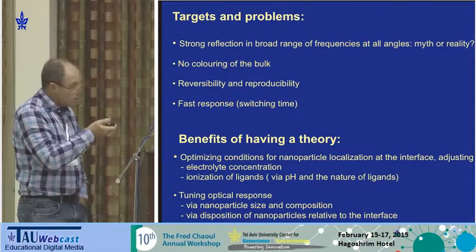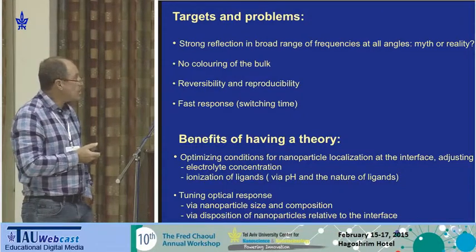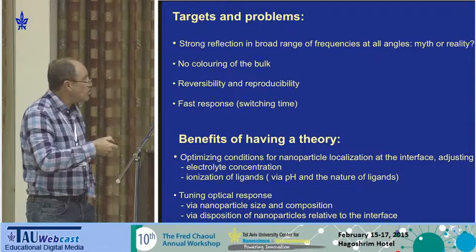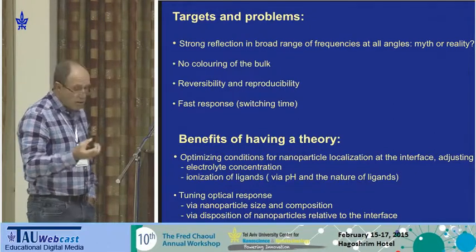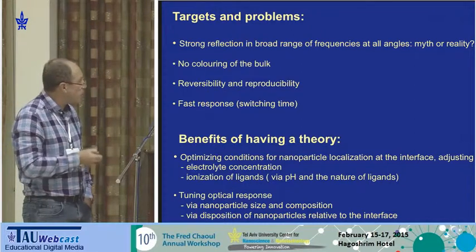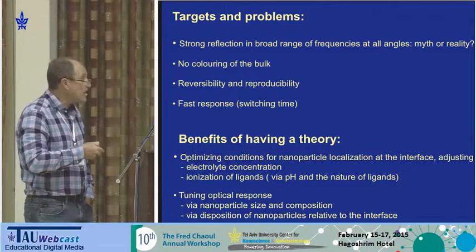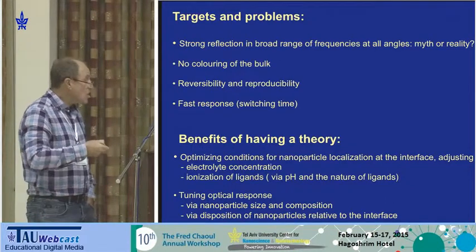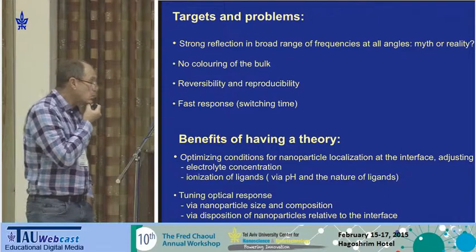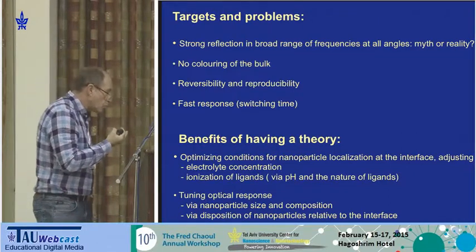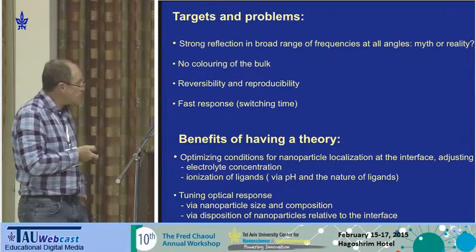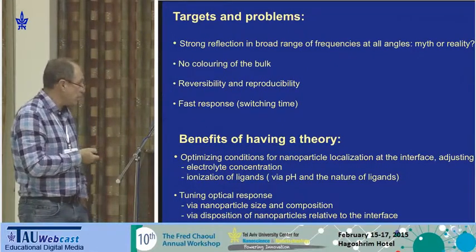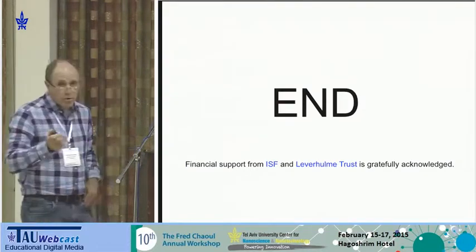To summarize: using nanoparticles of diameter 20 to 60 nanometers, you can create strong reflection at interfaces. Using low concentration in the bulk, you do not have color in the bulk. The problem is reversibility — the switching time cannot be reduced below 10 seconds. It was very important to do calculations before the first experiments, as this allowed tuning of parameters to find conditions under which these results can be achieved. Thank you for your attention.